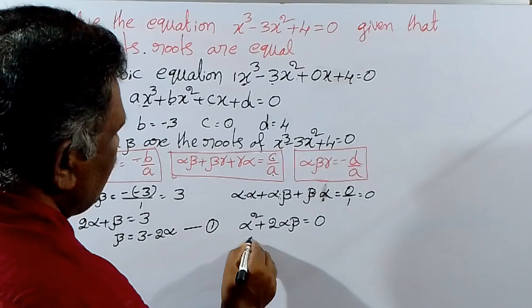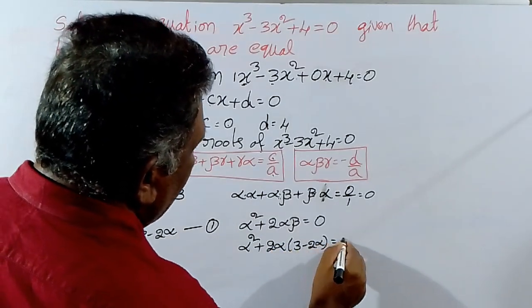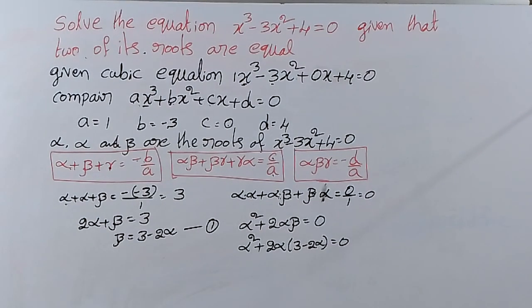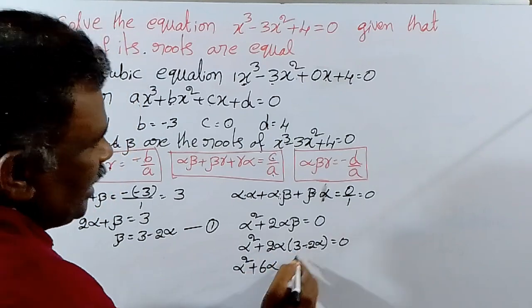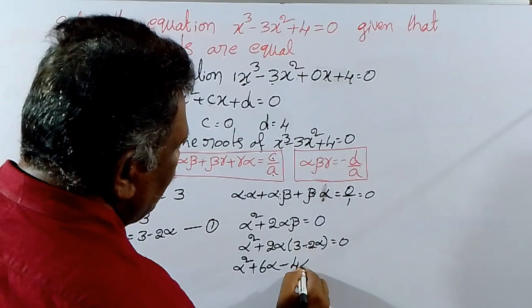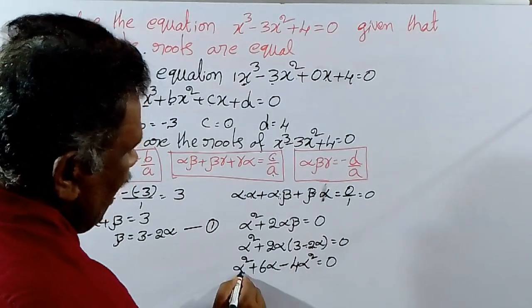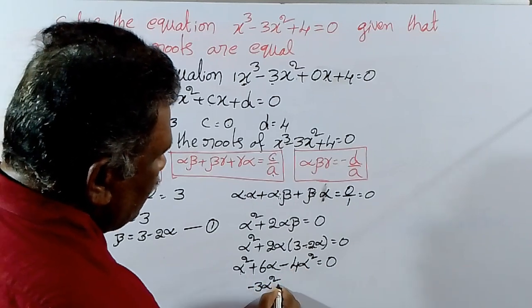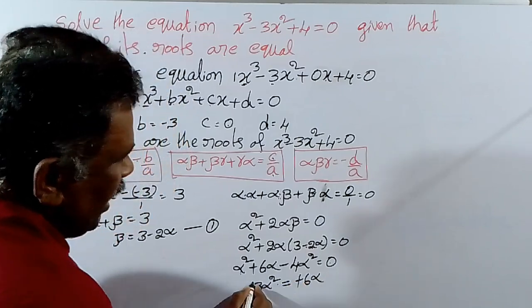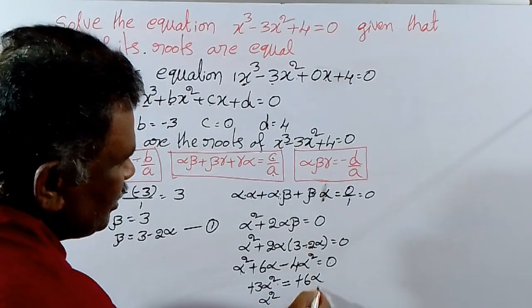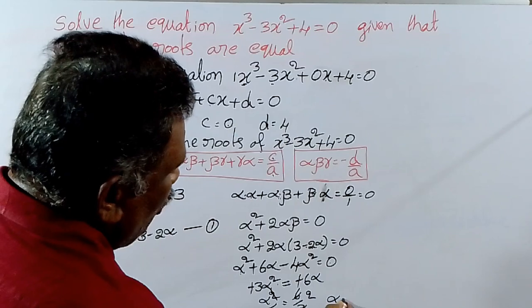Substituting beta equal to 3 minus 2 alpha into alpha square plus 2 alpha beta equal to 0: alpha square plus 2 alpha into (3 minus 2 alpha) equal to 0. That gives alpha square plus 6 alpha minus 4 alpha square equal to 0, so minus 3 alpha square plus 6 alpha equal to 0. Taking alpha common: alpha times (minus 3 alpha plus 6) equal to 0. Dividing by minus 3 gives alpha equal to 2.